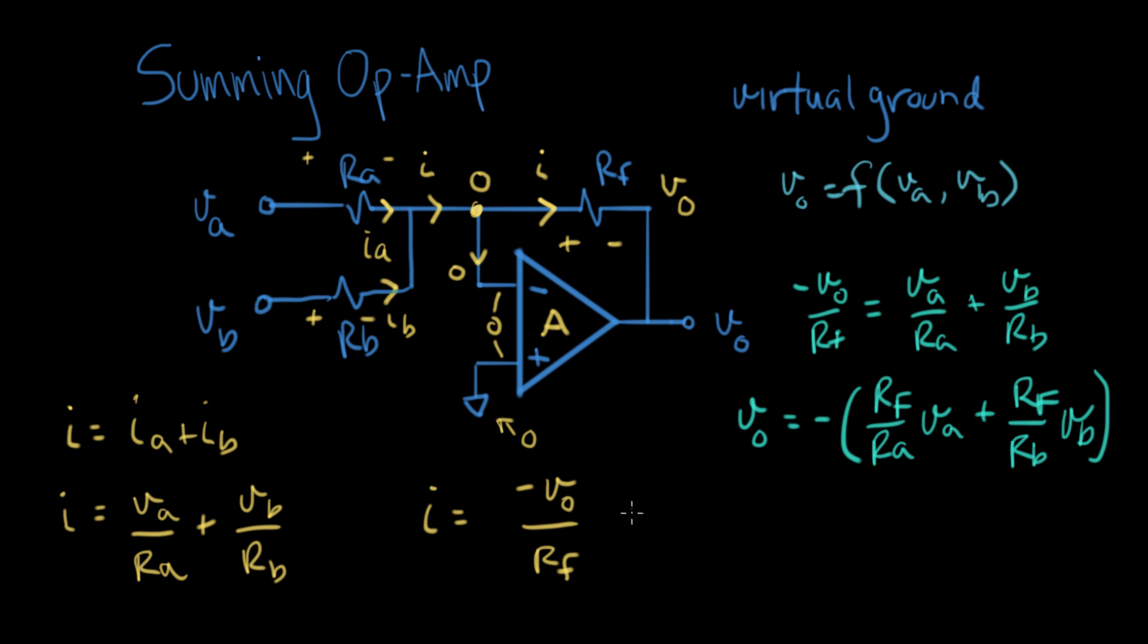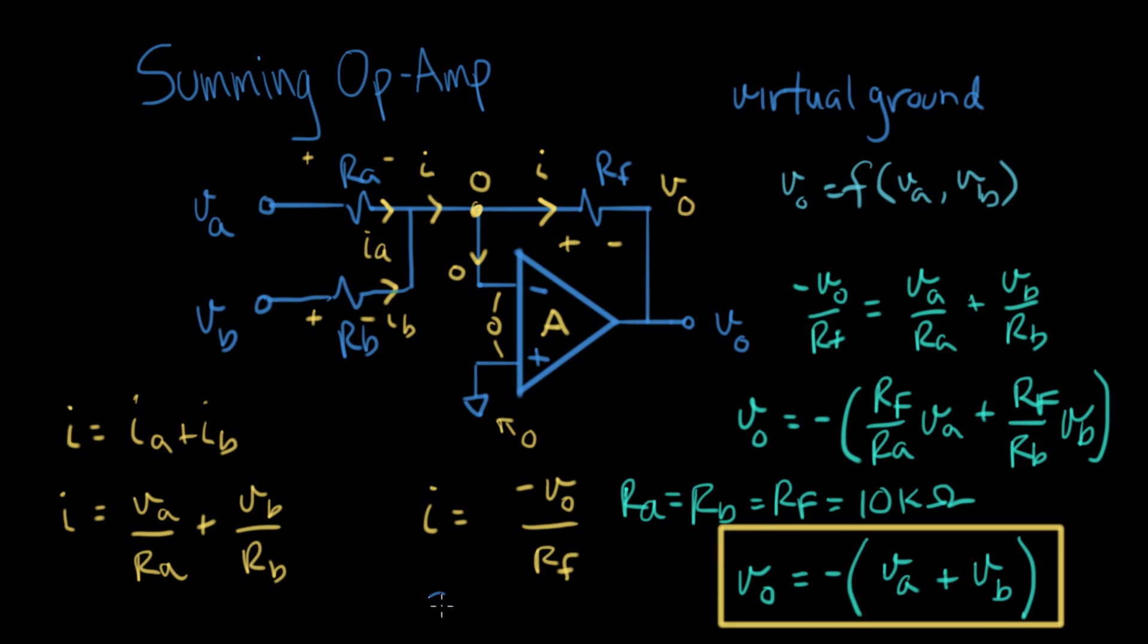Let's do a special case. Let all the resistors be the same: RA equals RB equals RF equals 10k ohms. Now we have Vout equals minus—we still have the negative sign, so there's some inversion going on. RF over RA is one, so it's just VA, and RF over RB is one, so this is VB. This gives us the nickname for this expression, which is called a summing op amp.